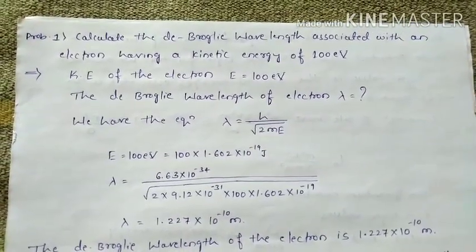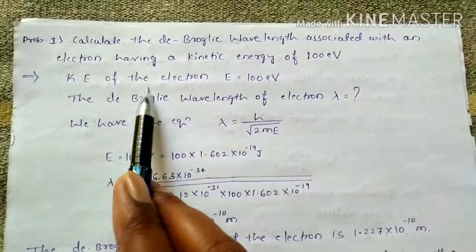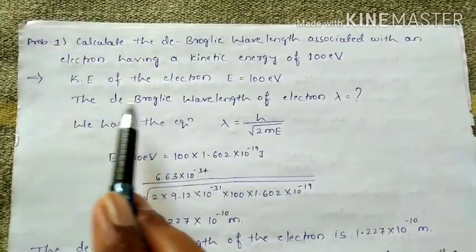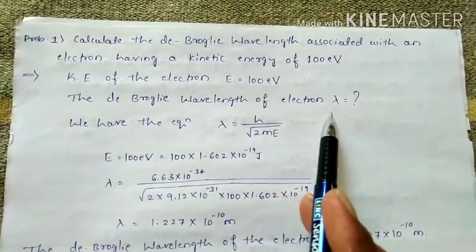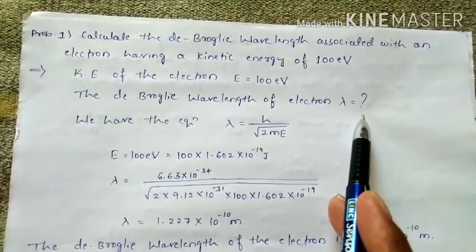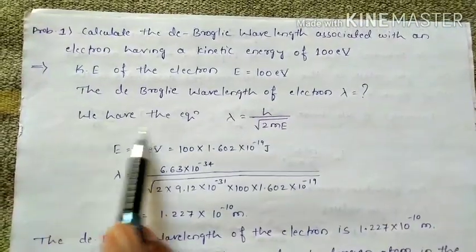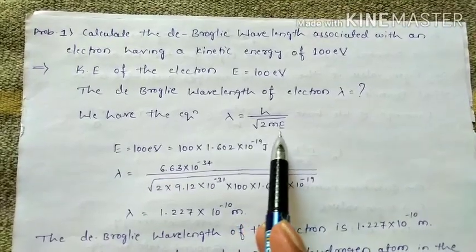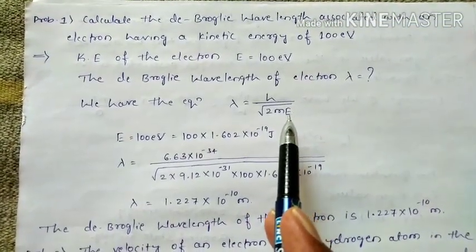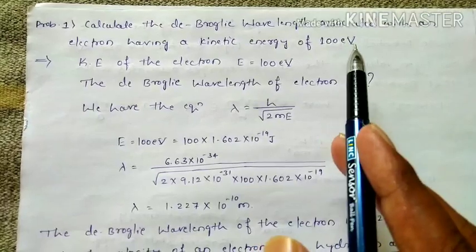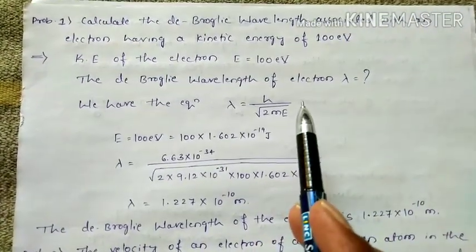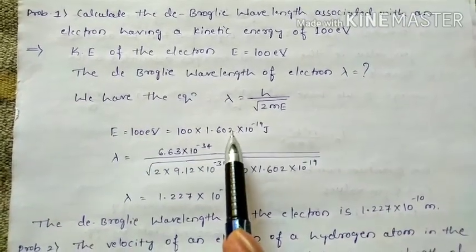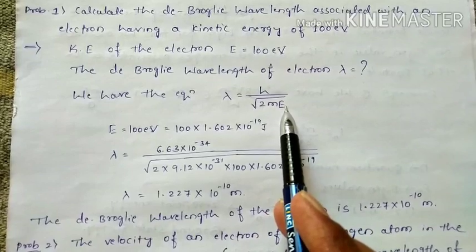Here the kinetic energy of the electron E is given, and we need to calculate the de Broglie wavelength lambda. Since E is given in electron volts, we must first convert it to joules before using the equation lambda = h / sqrt(2mE).